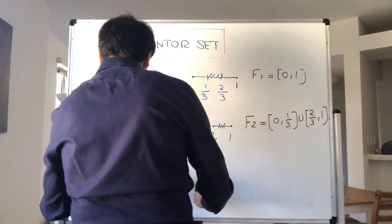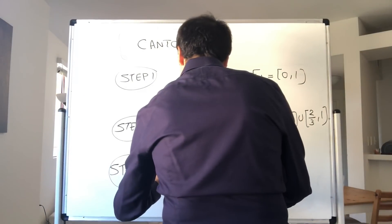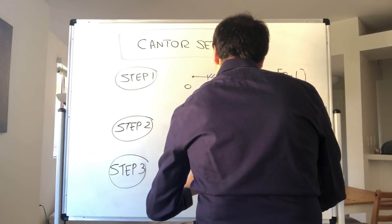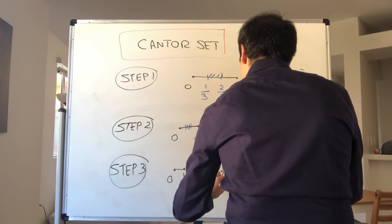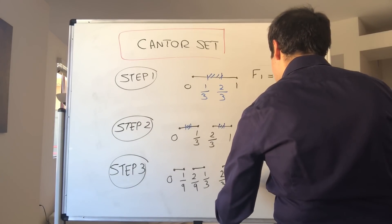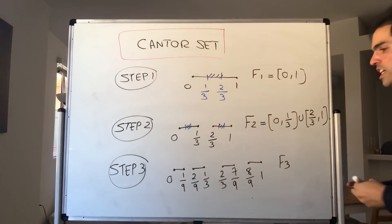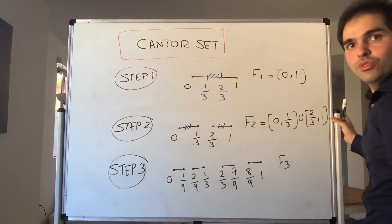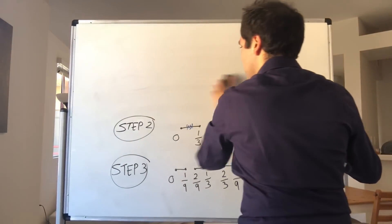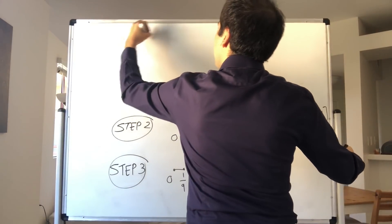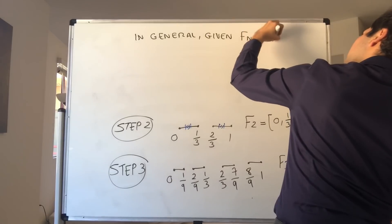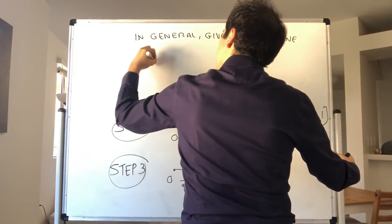Step three: you get [0, 1/9] ∪ [2/9, 1/3] ∪ [2/3, 7/9] ∪ [8/9, 1], which gives you F3. Then just continue in the same way: given any Fn, you define Fn+1 by removing the middle third of each sub-interval of Fn.